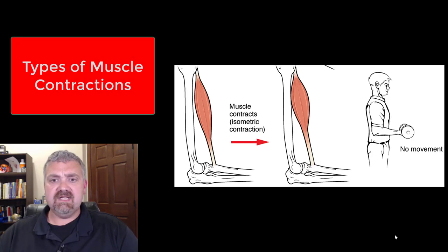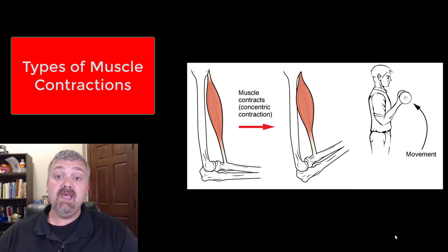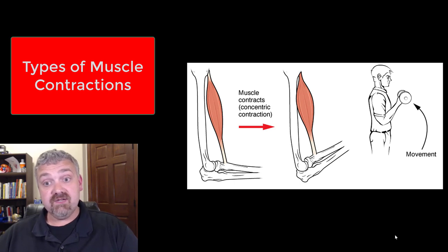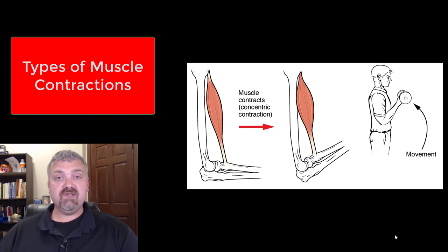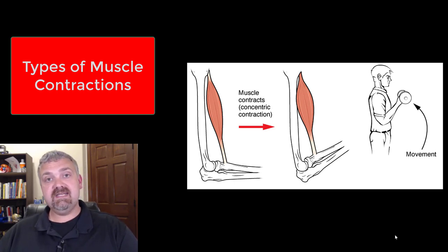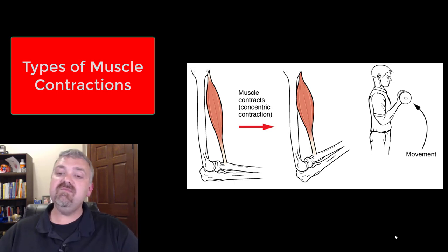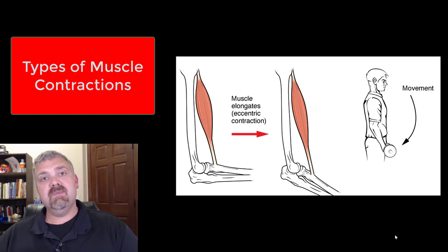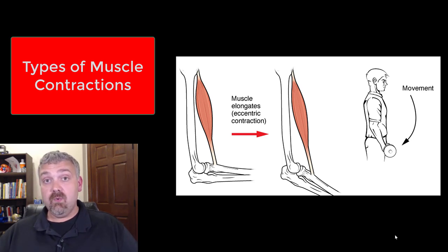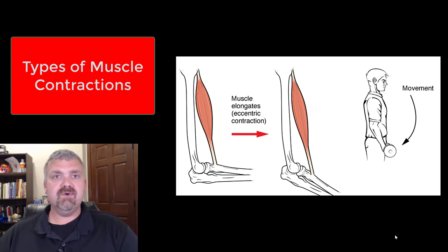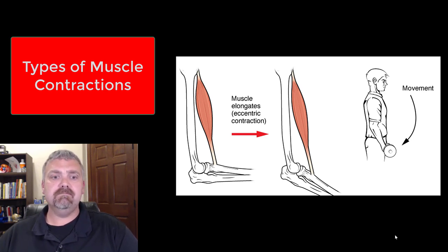Just to review: we have the isometric contraction — no change in muscle length, so no movement; think postural muscles. Then we have the two types of isotonic contractions: concentric contraction, muscles contracting while getting shorter, so you're lifting a weight or doing a positive movement; and eccentric contractions, muscles contracting while getting longer, so you're lowering a weight or doing a negative movement. Those are all the different types of muscle contractions that you need to know. Have a wonderful day. Be blessed.